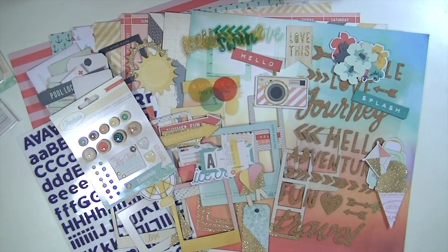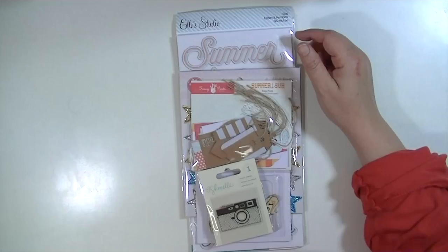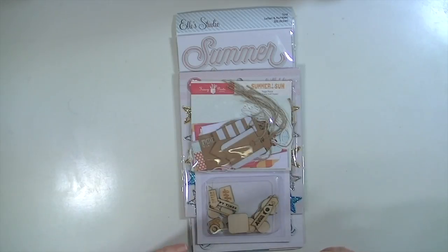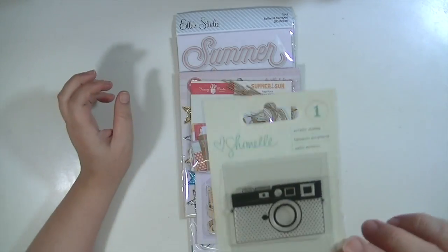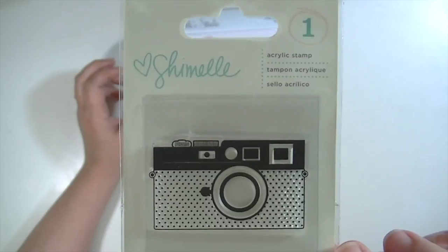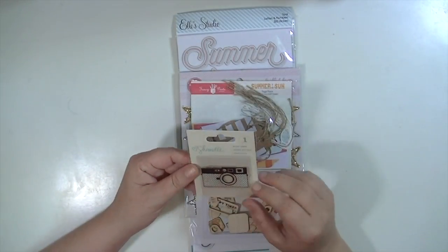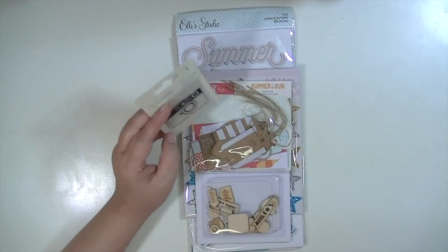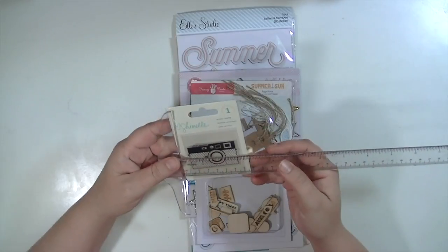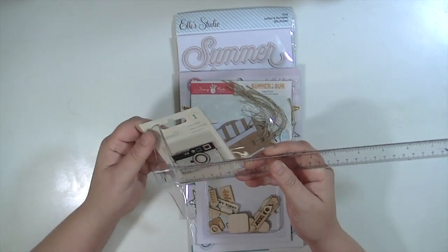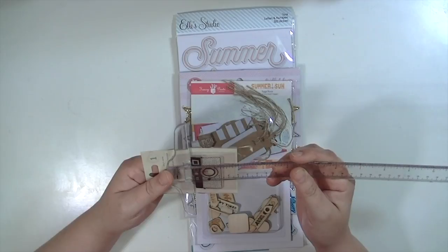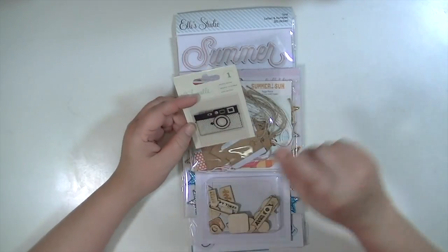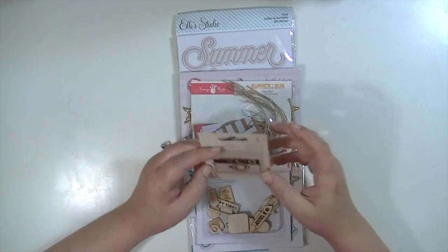Here is the June embellishment add-on. And the first thing is this super adorable little camera stamp from Shamel. I have never seen this before. It is so cute. Let me see how big it is. It's exactly two inches by exactly an inch and a quarter. Really nice size to stamp and cut out and make a little embellishment.